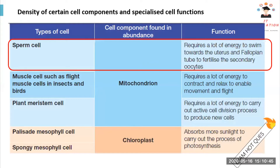Density means how frequent you can find the cell components there. High density means there's a lot — like in KL, high density of people means there's a lot of people. If I say high density of mitochondria, there's a lot of mitochondria. High density of chloroplasts means there's a lot of chloroplasts. Understand the word density.